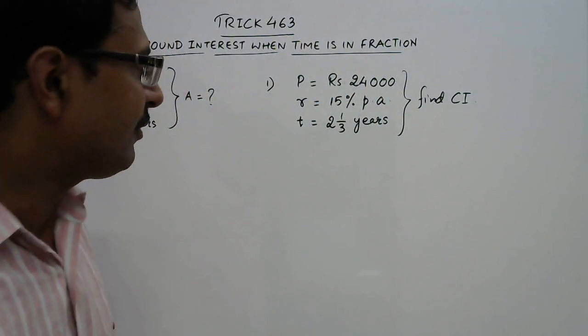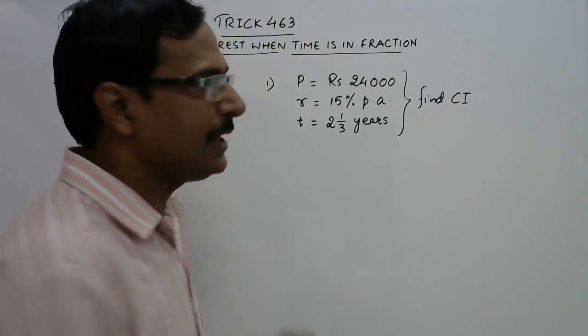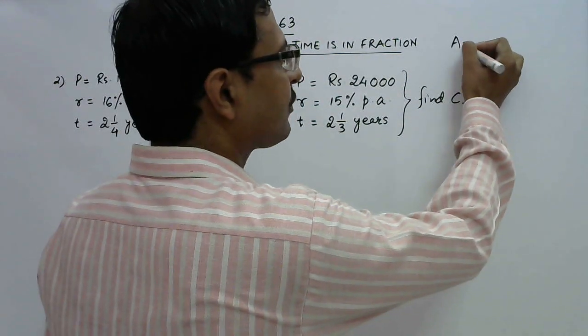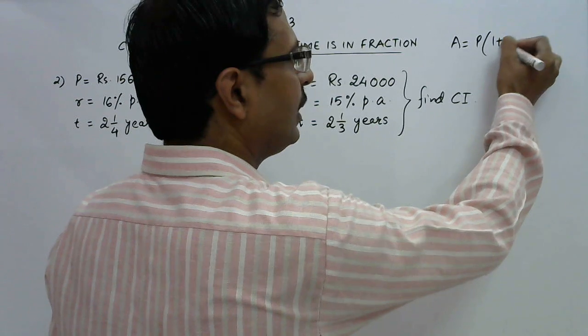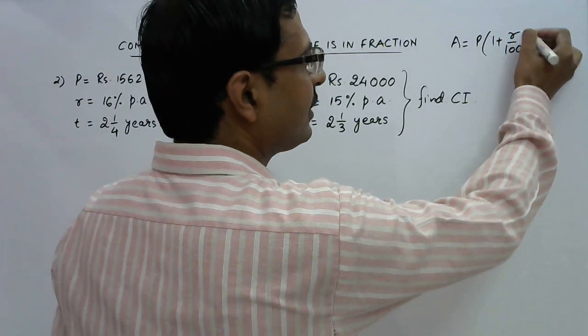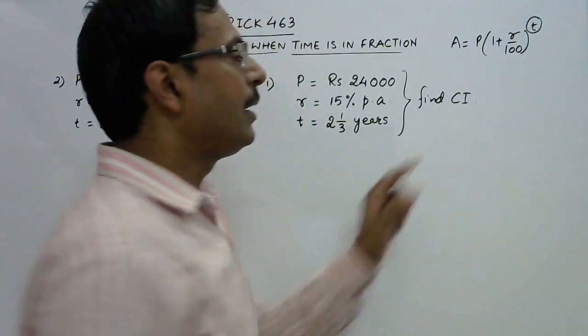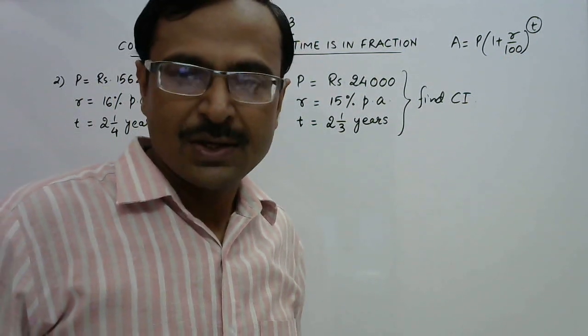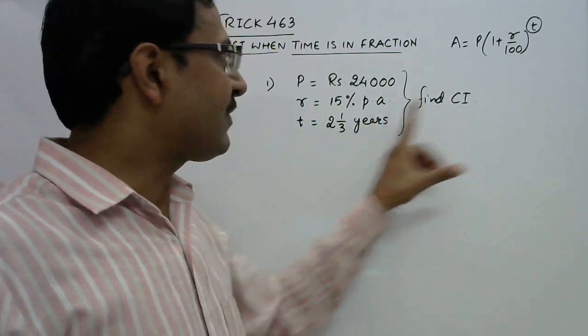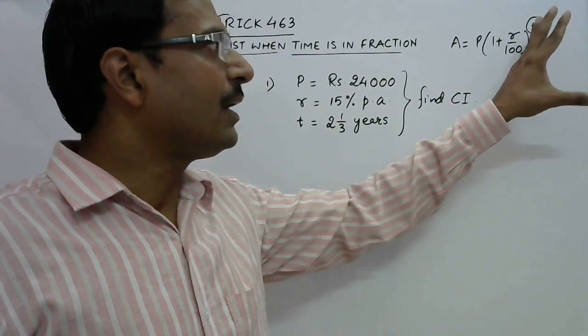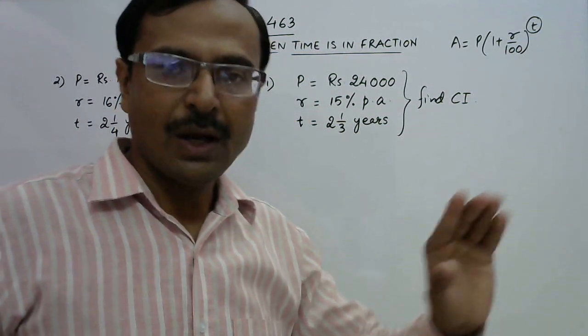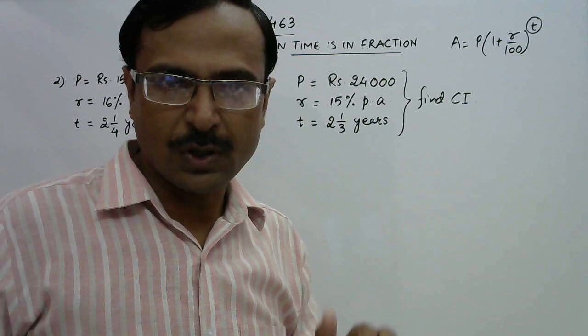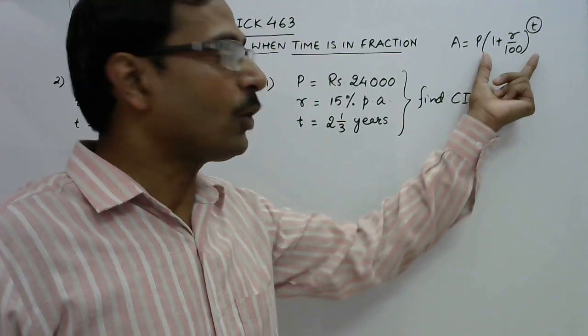Whenever we apply the formula for finding the amount in case of compound interest we use the formula where the time comes in the power of this bracket 1 plus r upon 100 as base. So if the time given is in fractions then there is a bit of confusion how we deal with such problems because fractional powers cannot be calculated.